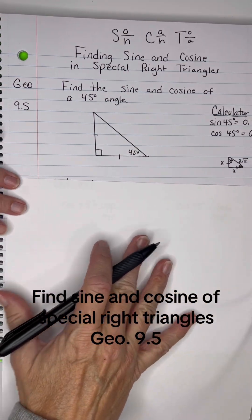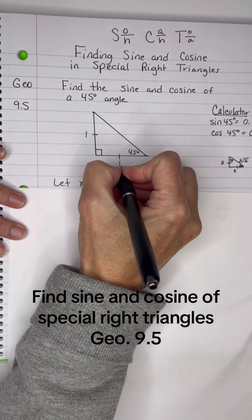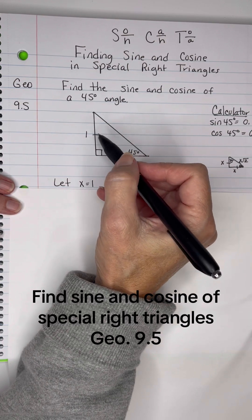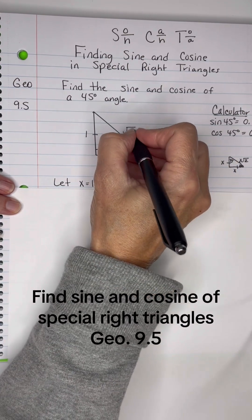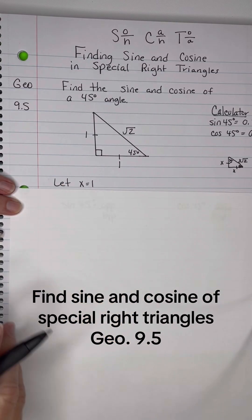Let's let our x equal 1. Okay, let's just say this x is 1. That means this x is 1. And that means that my hypotenuse would be 1 root 2, or just root 2 by the song x and x and x root 2.